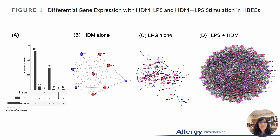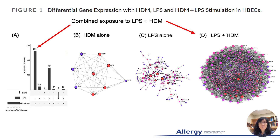First, we analyzed differentially expressed genes across each treatment compared to the vehicle control in all six donors, regardless of their disease status. In panel A, the upset plot indicates the combined exposure to LPS and HDM results in the highest number of differentially expressed genes, followed by the individual exposure to LPS and HDM. In panels B to D, protein-protein interaction networks for differential gene expression also indicate the combined exposure includes the highest number of nodes, indicating the most complicated network.